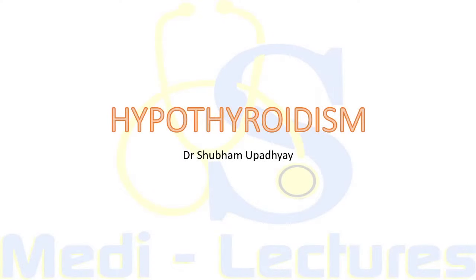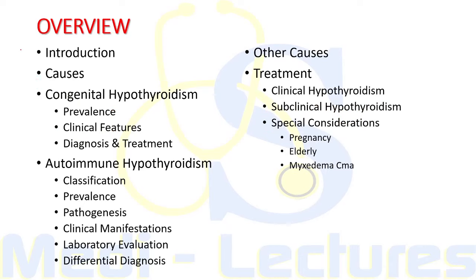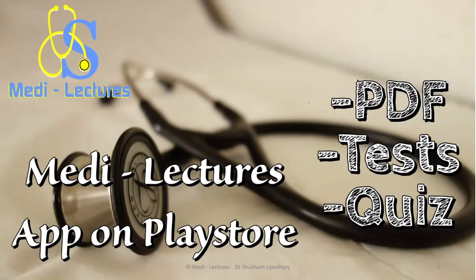Today we will be discussing one of the commonest endocrine disorders, that is hypothyroidism. We will first see the introduction, what are the causes of hypothyroidism, then we will have a detailed discussion of congenital hypothyroidism, autoimmune hypothyroidism, then we will see the other causes, and finally the treatment part of clinical, subclinical, and certain special considerations.